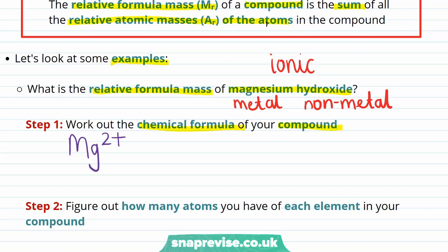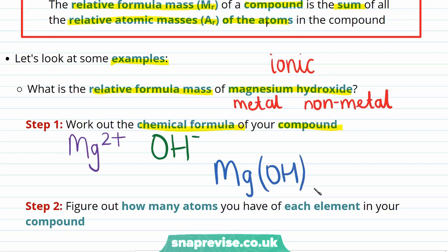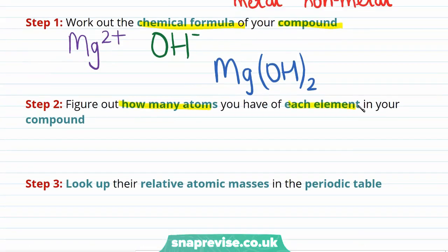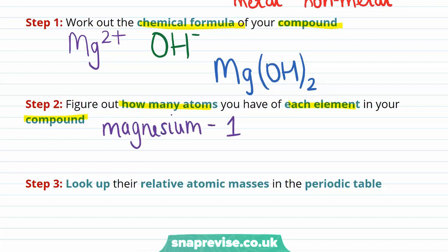The hydroxide ion is one that will come up a lot and you need to remember. It has the chemical symbol OH⁻, containing oxygen and hydrogen, with a single negative charge. Overall, we know that ionic compounds will have a neutral charge. So therefore, we can see that in order to balance the 2+ charge on the magnesium ion, we need two hydroxide ions. Therefore, the formula for magnesium hydroxide is going to be one magnesium ion and two hydroxide ions, where we write the formula for the hydroxide ion in brackets with a small 2 next to it. The second step is to work out how many atoms of each element you have in your compound. In magnesium hydroxide, we have one atom of magnesium, two atoms of oxygen, and therefore also two atoms of hydrogen.